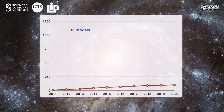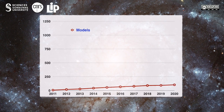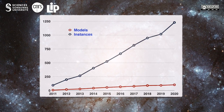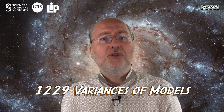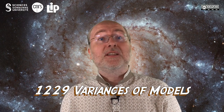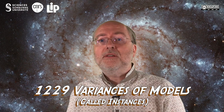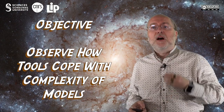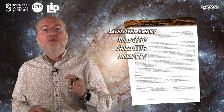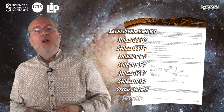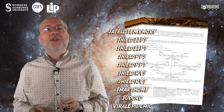Year after year, our model database is growing and contains now 103 different specifications. Many of them are parametrized and can be derived into several instances having various complexities. In 2020, each tool was confronted to 1,229 variants of these 103 models. Instances are a good way to observe how tools can cope with increasing complexity. New models are added every year — we call these surprise models because no tool was confronted to them before, so no strategy could have been elaborated.